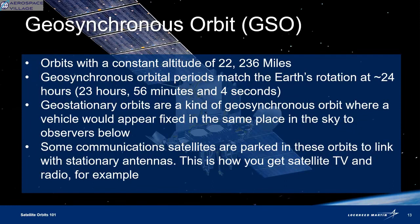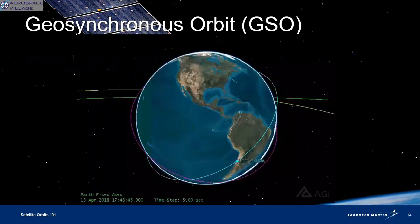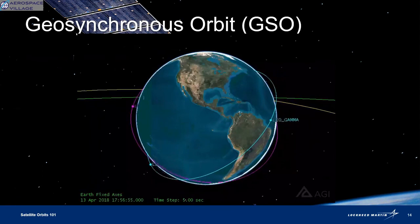Geosynchronous orbits happen at that upper MEO threshold and match the planet's rotation in a journey around the Earth at about 24 hours. Geostationary orbits are a kind of geosynchronous orbit where it would look to us from below as if the satellite's not moving and is fixed in one place. This is useful in communications between Earth antennas and satellites — it's how you get satellite TV and radio.